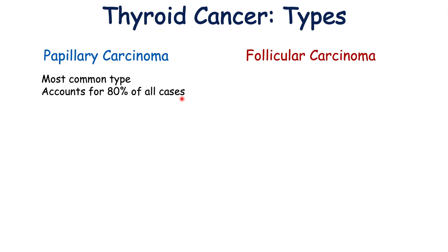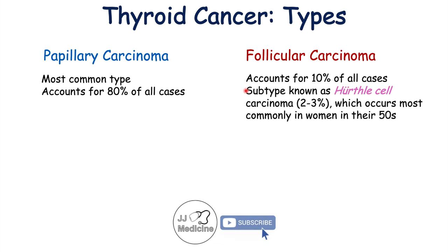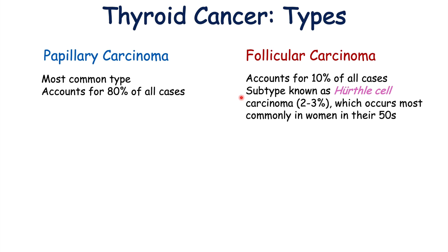The second is follicular carcinoma, which accounts for approximately 10% of all cases of thyroid cancer. It has a particular subtype known as the Hurthle cell carcinoma subtype, which accounts for approximately 2 to 3% of all cases of thyroid cancer.